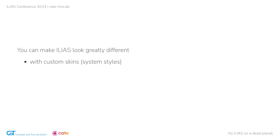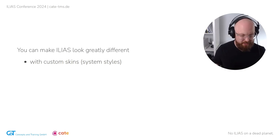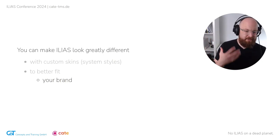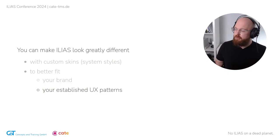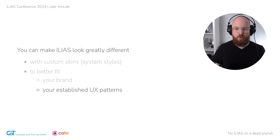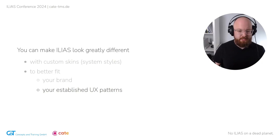In many parts of the interface and the code, these skins are called system styles. I always call them skins or themes because that's what they're often called in other systems, but I'm using the term interchangeably here. By changing the look of ILIAS, you can make your ILIAS instance fit more to your brand. You can also use established UX patterns from other parts of your institution — for example, if your users are used to certain icons or color schemes for important messages, it allows you to put these design patterns that your people already know into ILIAS.